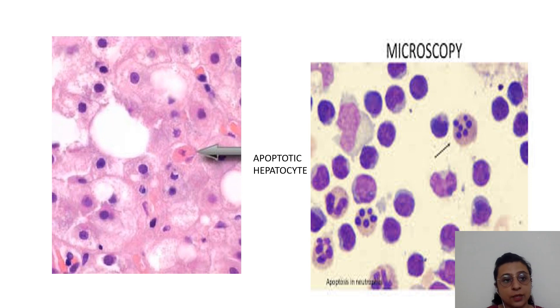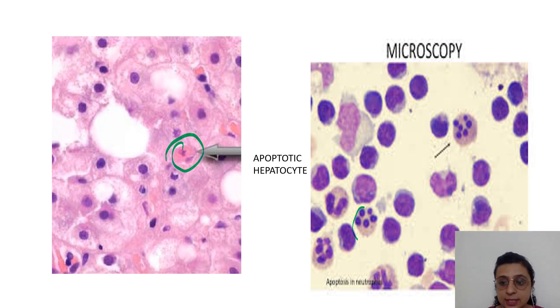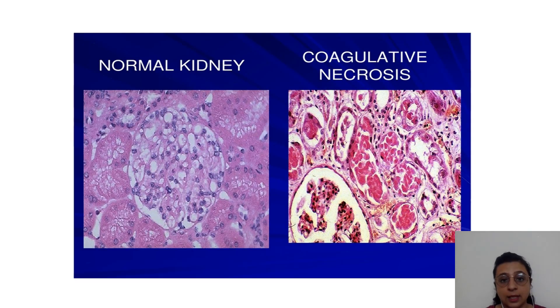Can you appreciate these apoptotic shrunken hepatocytes — these apoptotic bodies? This is an example of physiological apoptosis.